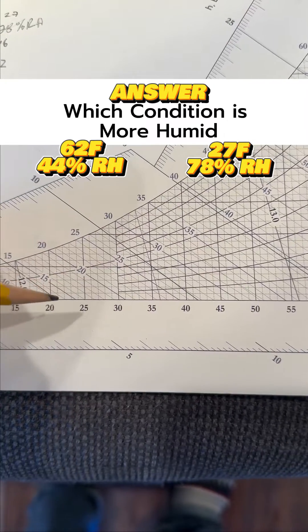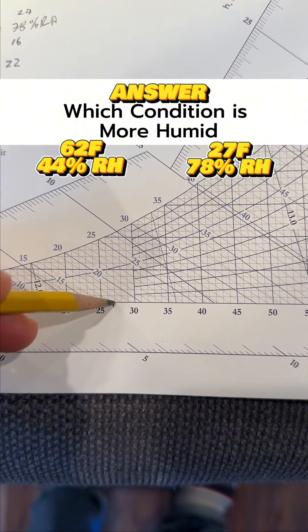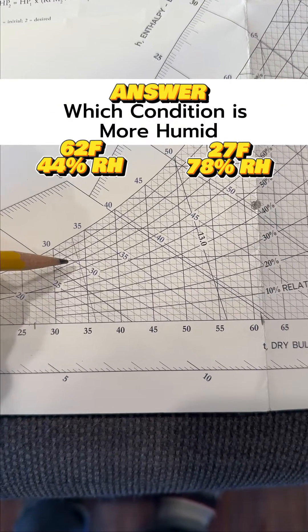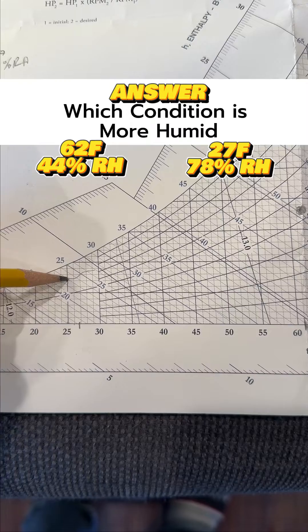The second condition, 27 degrees, which is right here. And the relative humidity is 78. So let me look at these lines here. That would be roughly about right here.